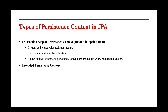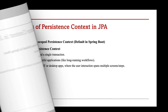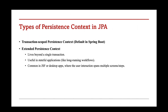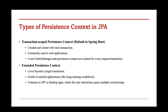Transaction Scoped Persistence Context is the default one in Spring Boot. It's created when a transaction starts and closed automatically when that transaction ends. This is perfect for web applications where each request is short and independent — for every HTTP request, a new EntityManager and Persistence Context are created. Extended Persistence Context is a bit different; it lasts beyond a single transaction and stays active even when your transaction ends. It's mostly used in stateful applications like long-running workflows and desktop apps. It's not common in Spring Boot, but super useful when you need long-lived conversations between your app and the database.